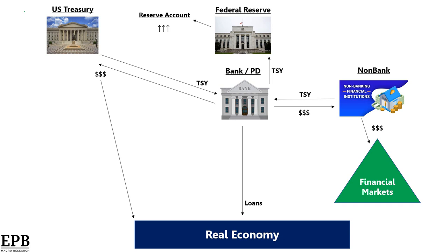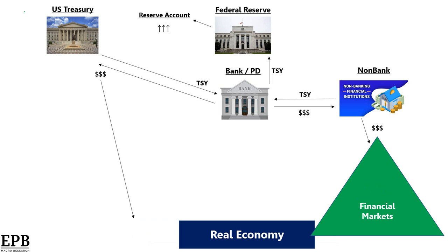The only way money gets into the real economy is when the Treasury spends money directly into the economy or banks make new loans. You can see here how QE creates a boom-bust type system because money continues to circulate in the financial markets and asset prices can go up. But if there's no loans being made, then the real economy starts to atrophy. Financial markets get bigger, the real economy gets smaller, and you have less cash flows in the real economy to support increased valuations in financial assets.